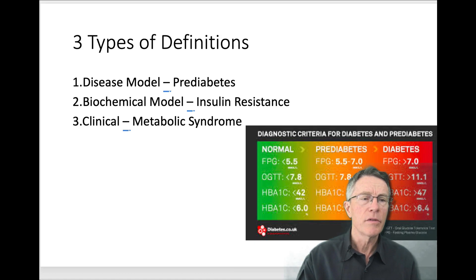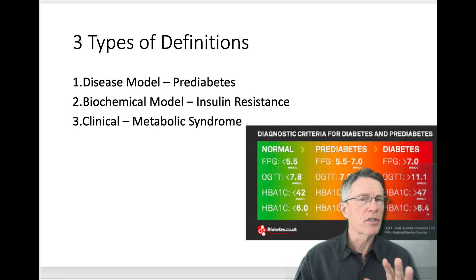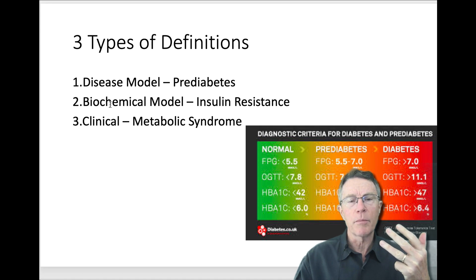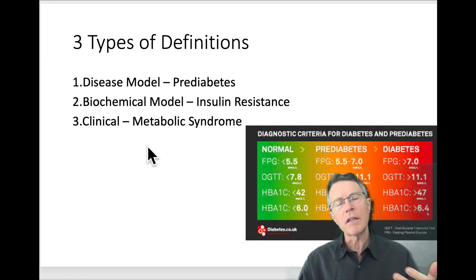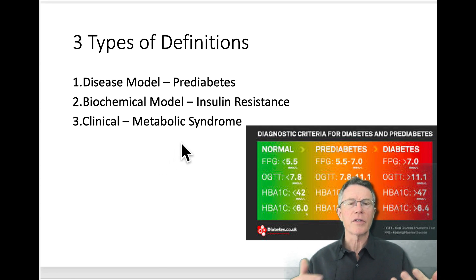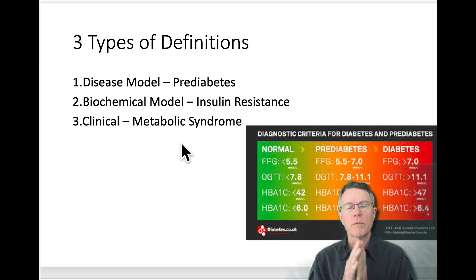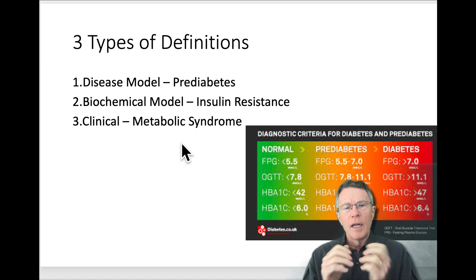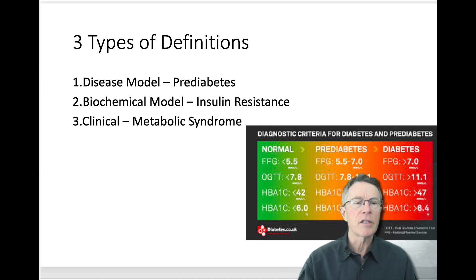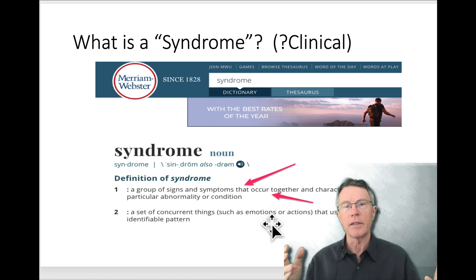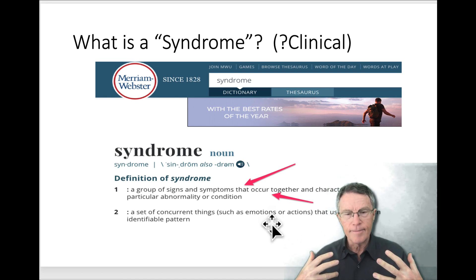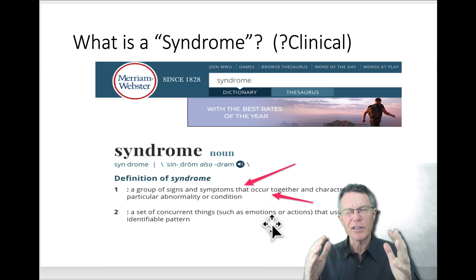Three types of definitions: the disease model — pre-diabetes; the biochemical model — insulin resistance; and the final model — clinical, which is what a doctor sees. You don't really hear the term metabolic syndrome quite so much anymore. Let's define syndrome: a syndrome is a group of signs and symptoms that occur together and characterize a particular abnormality or condition. In other words, the doctor really doesn't know totally what's going on.